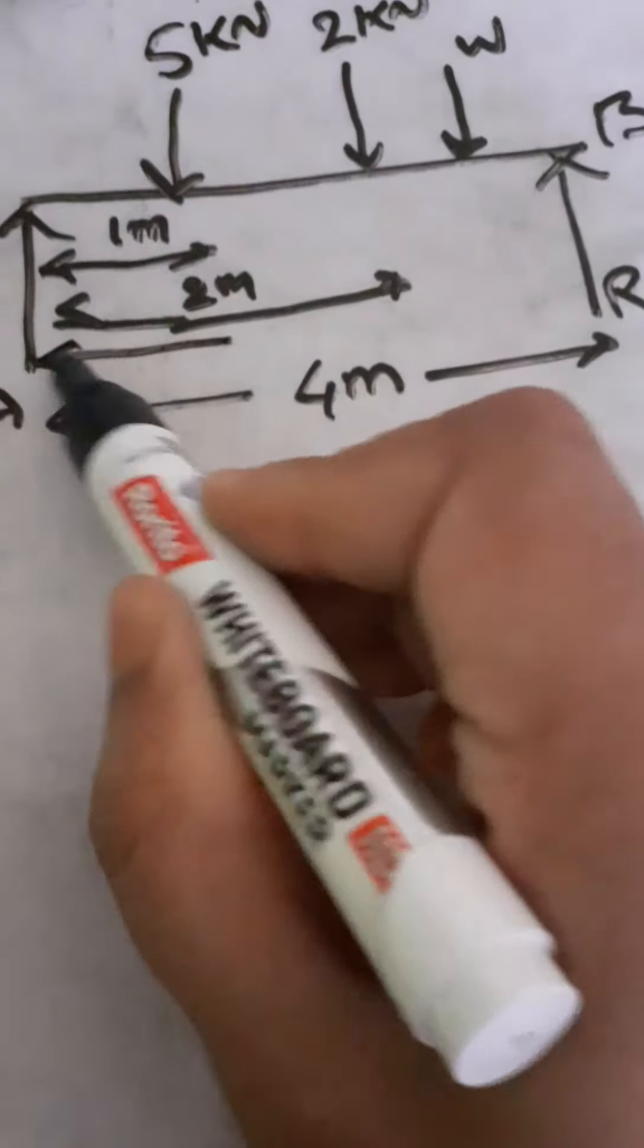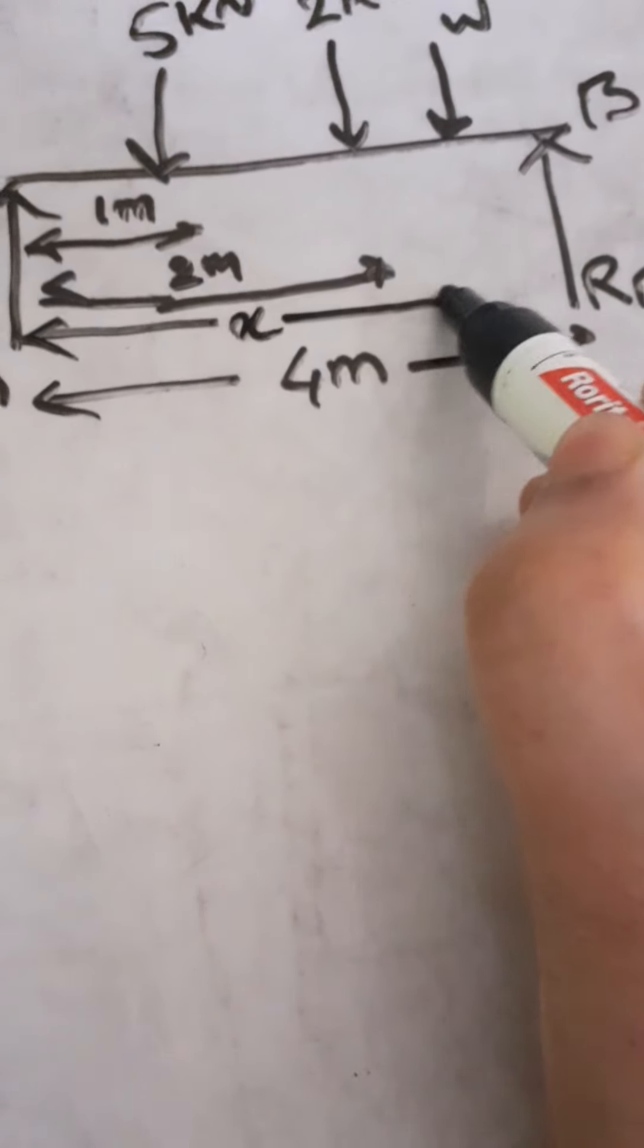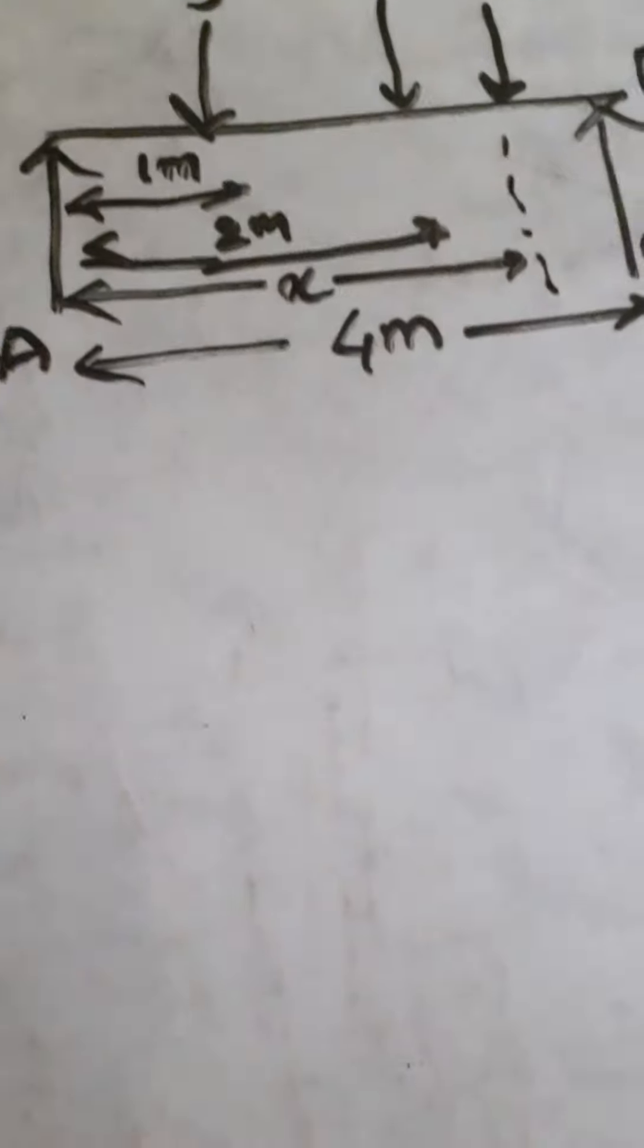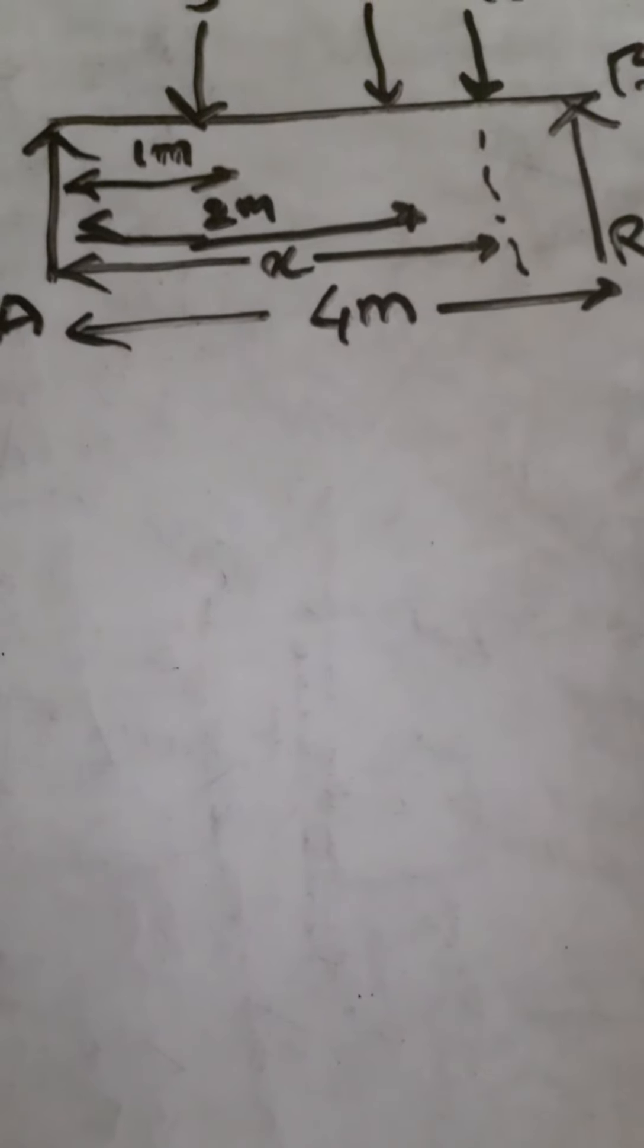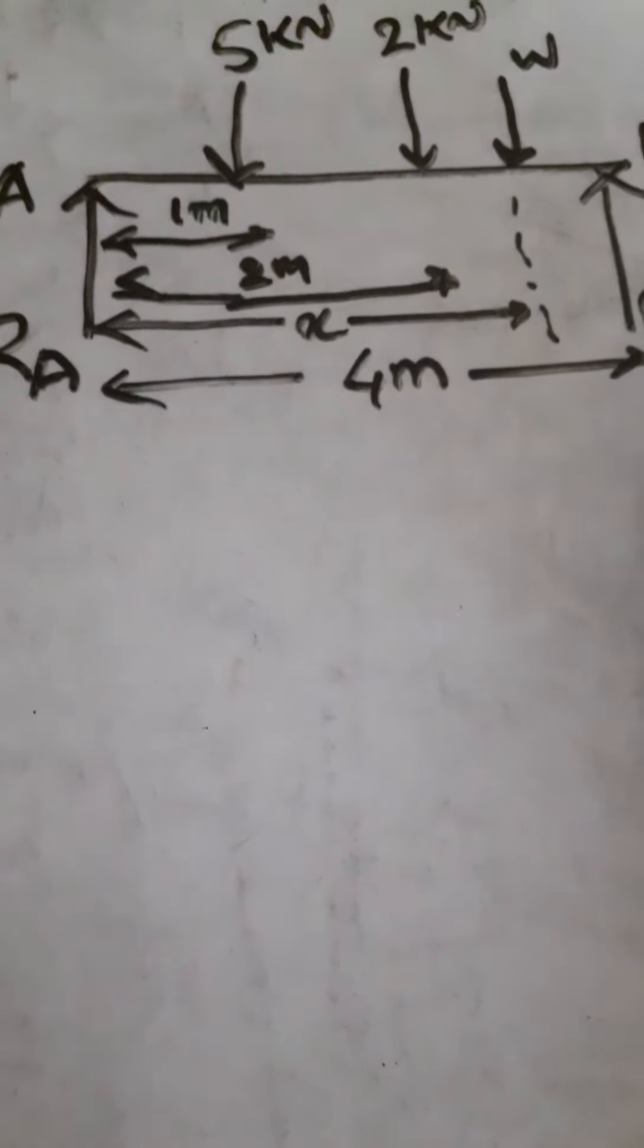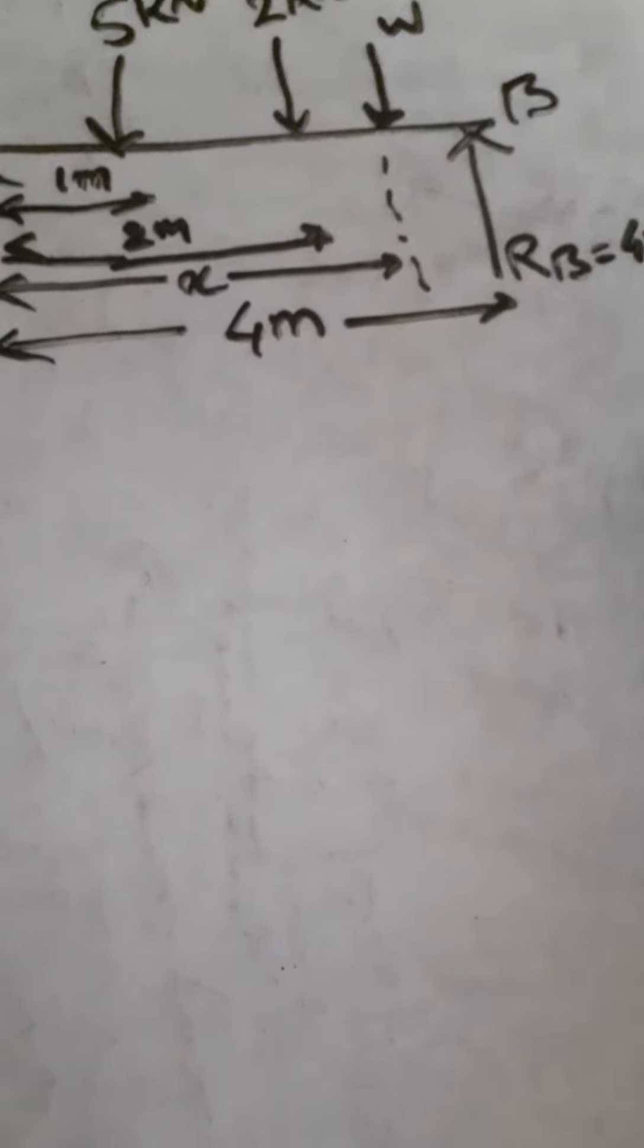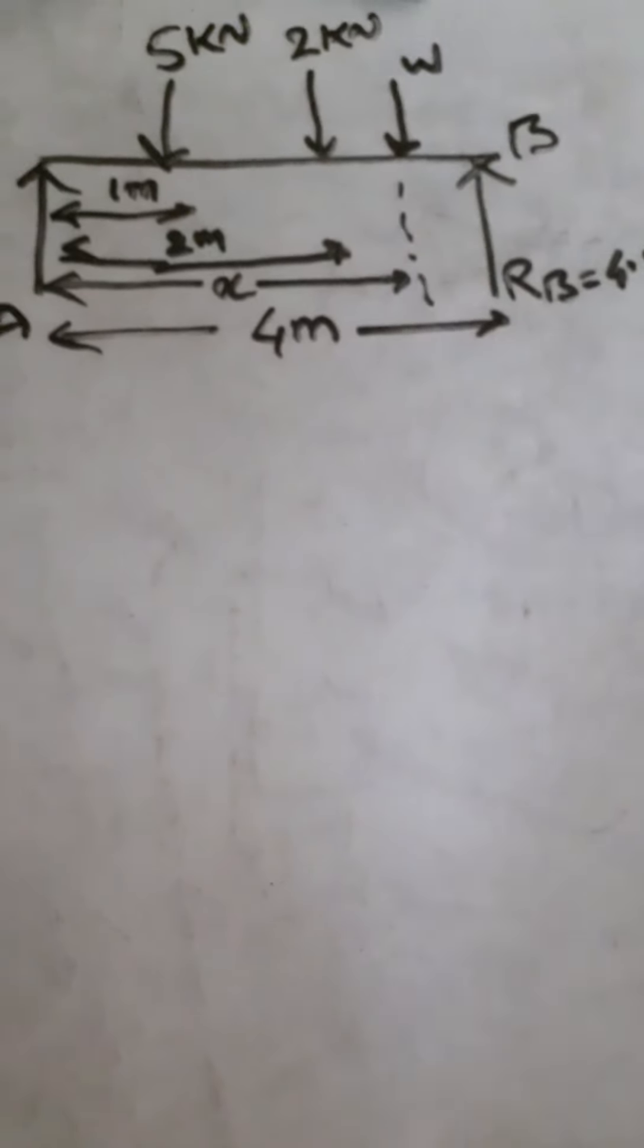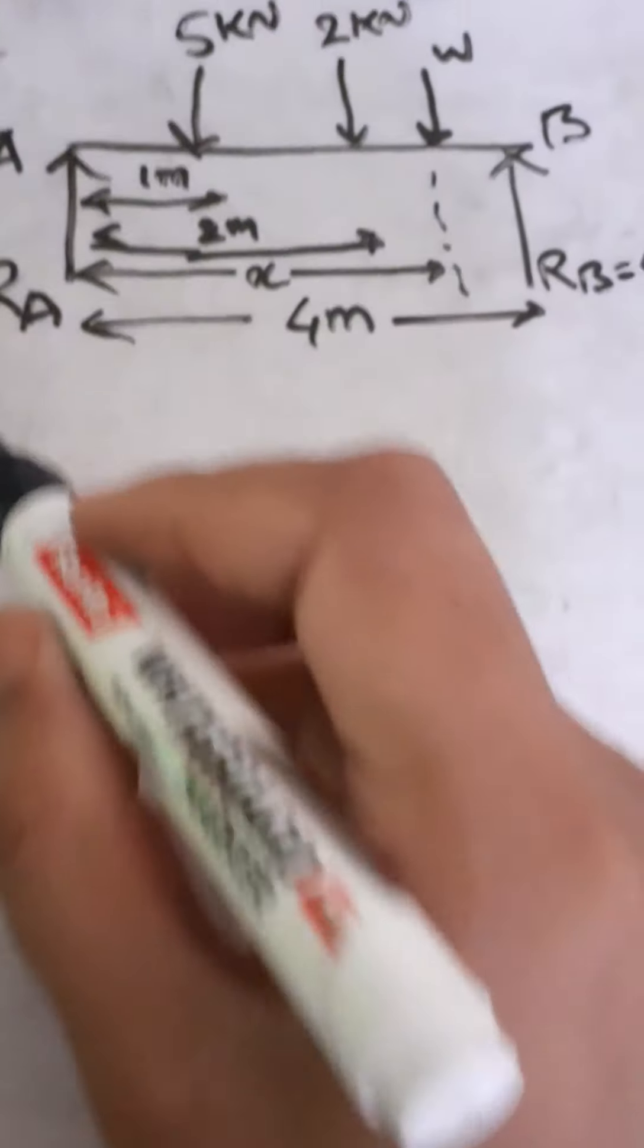W is at distance x from end A. And we are told that the support reaction at the end B is 4.5 kilonewtons.